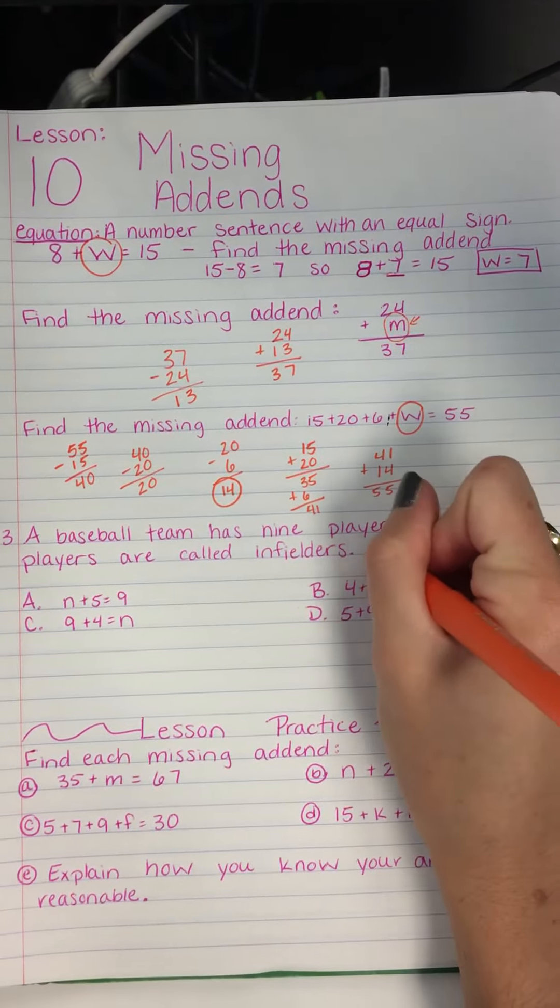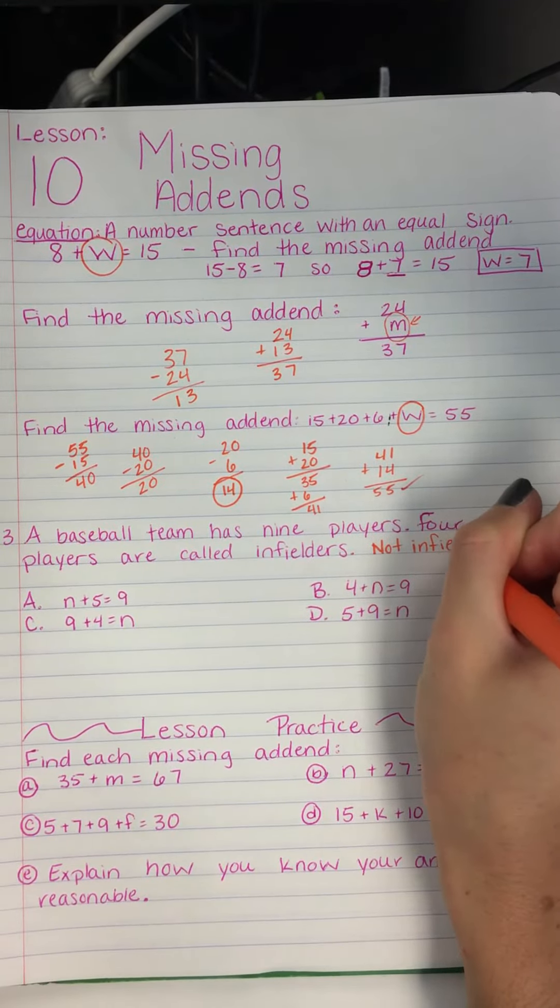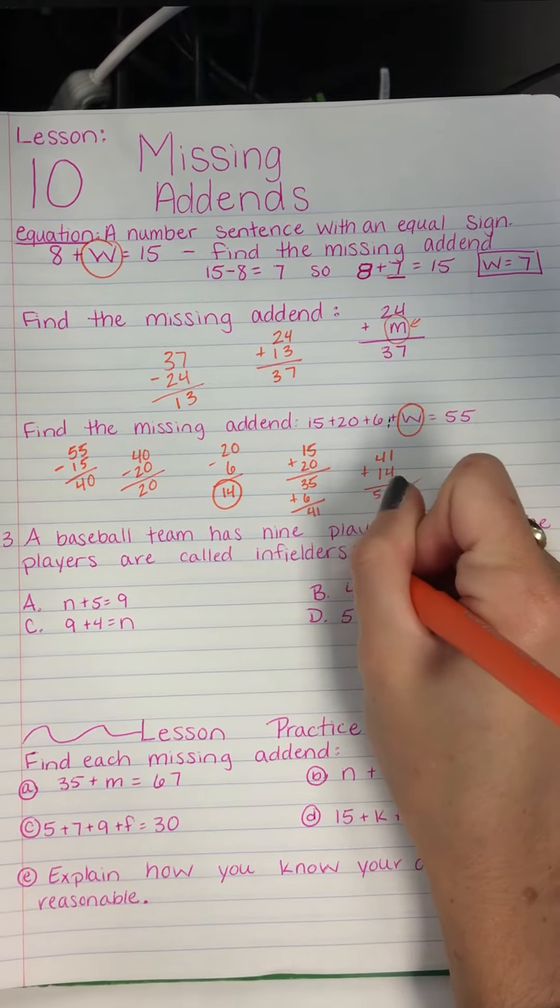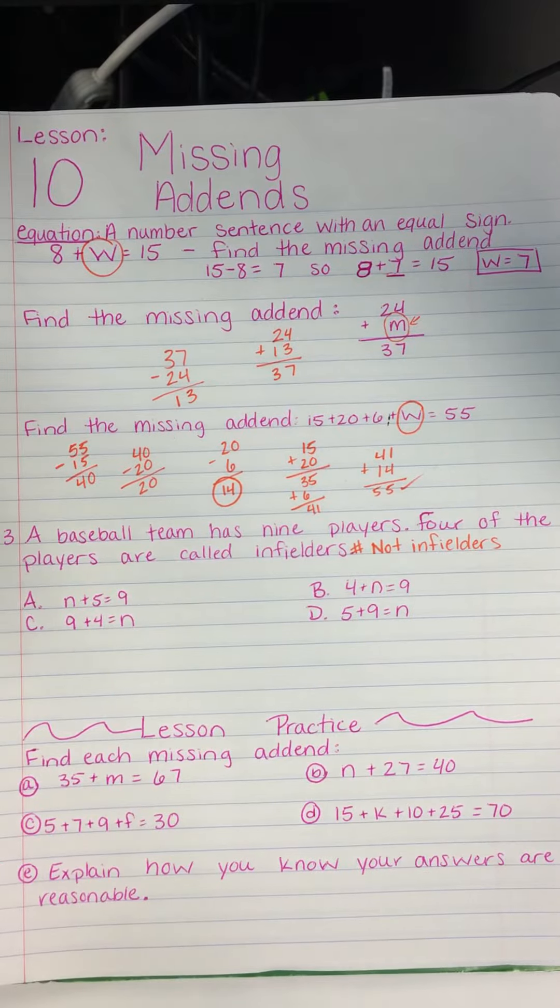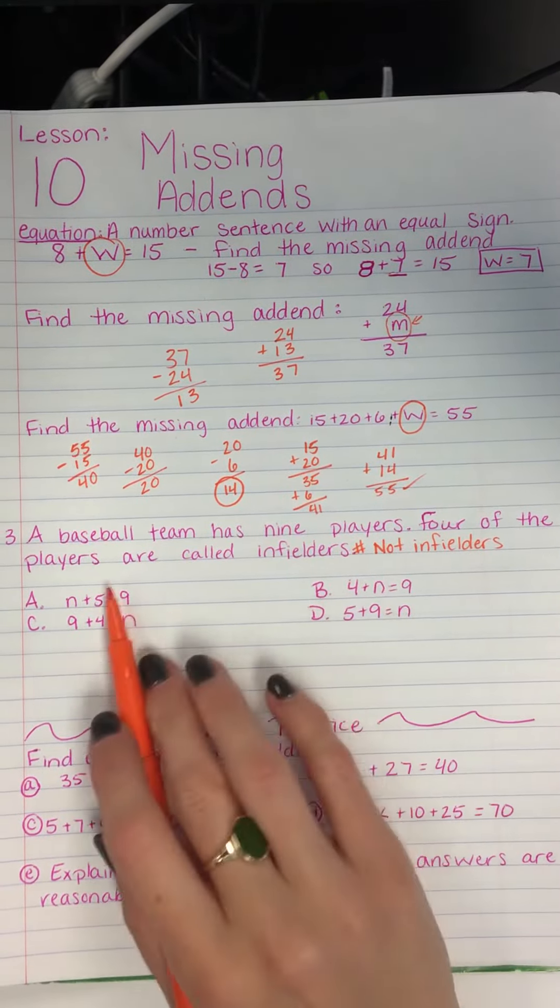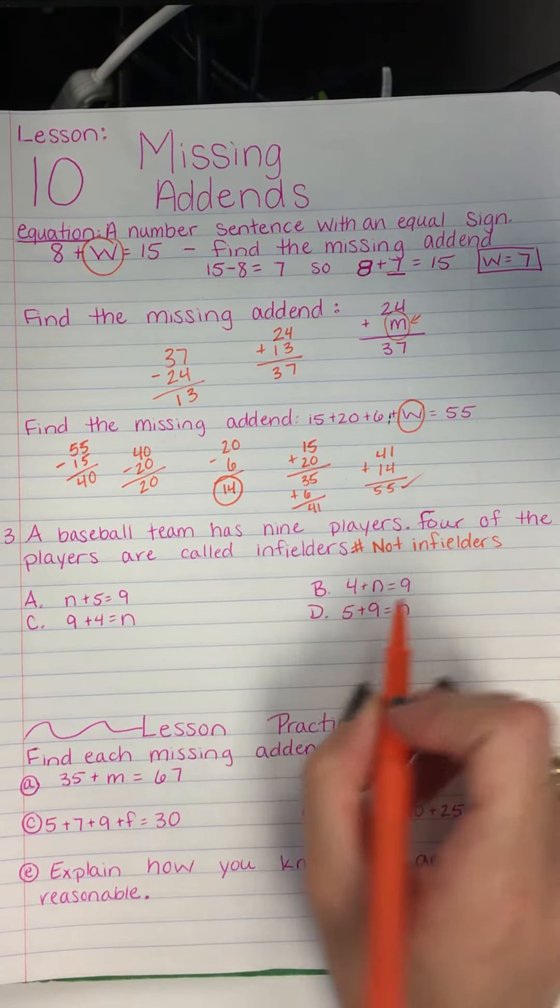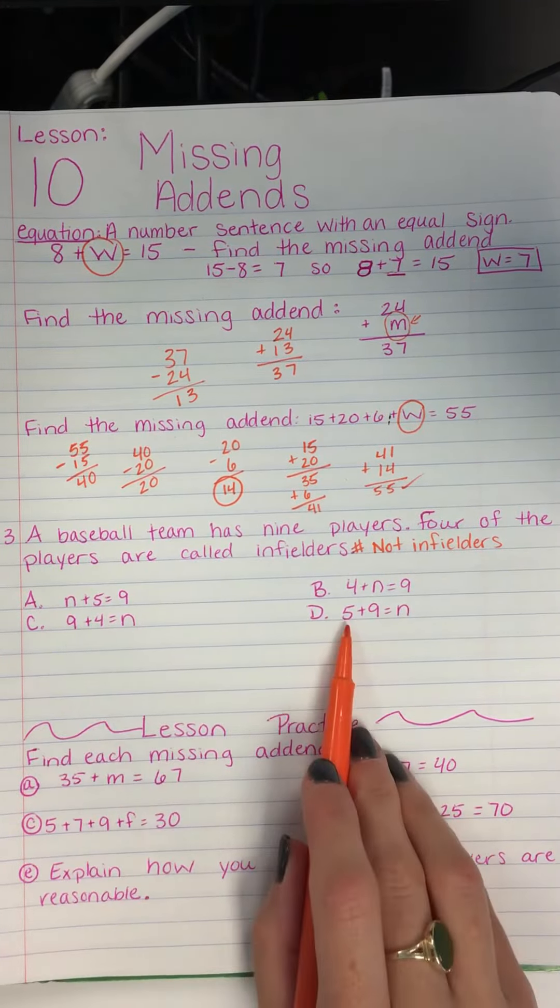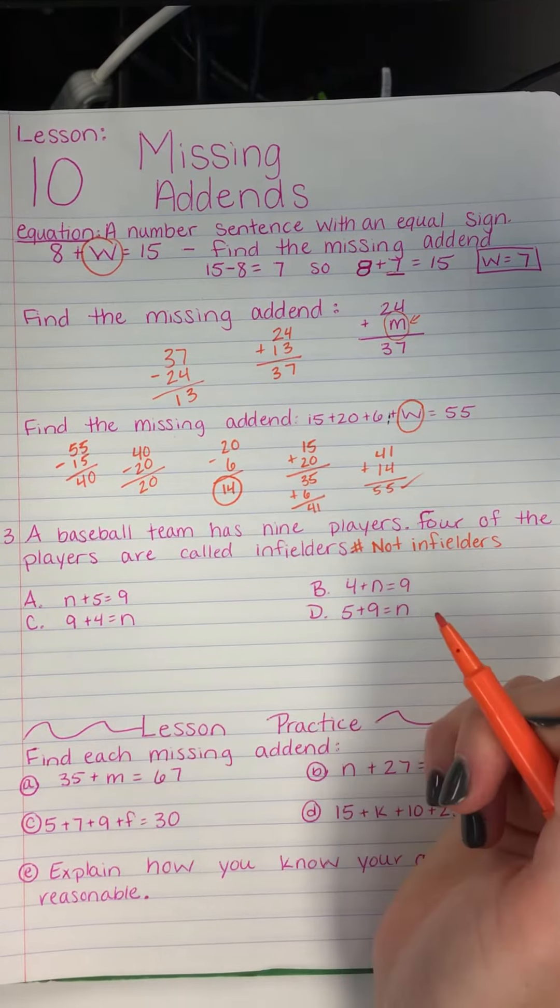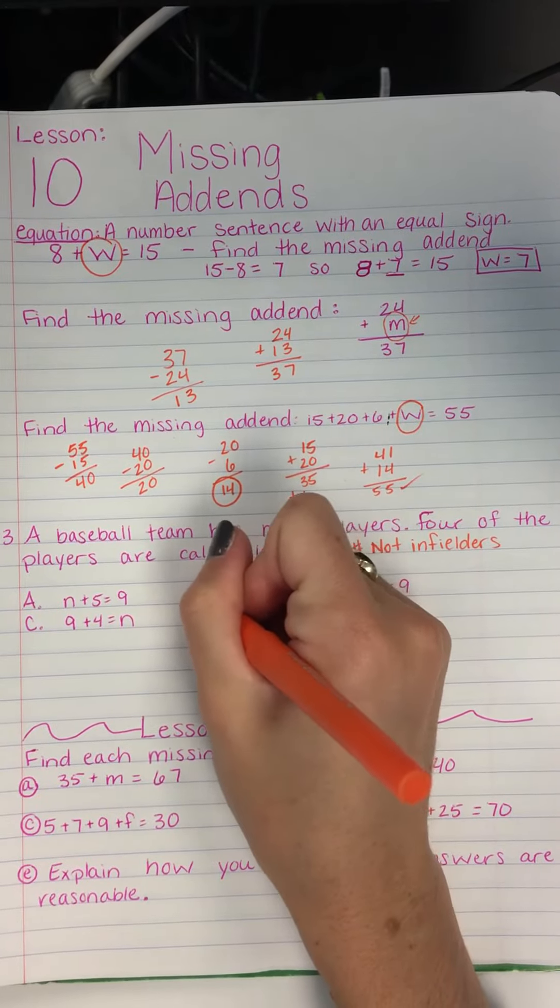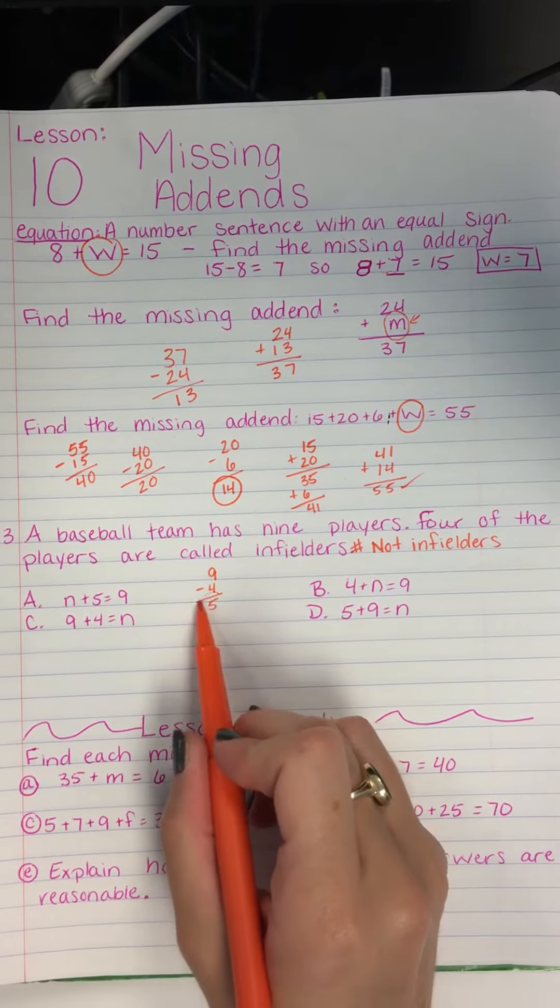So what we're looking for is not infielders. So the number that is not infielders. Okay. So, let's see. There's 9 players, and 4 of them are infielders. How many are not infielders? So, 4 are, so we know 9 minus 4. Well, we don't know 9 minus 4, so let's do it. 9 minus 4 equals 5. Okay. So we know that is our answer.